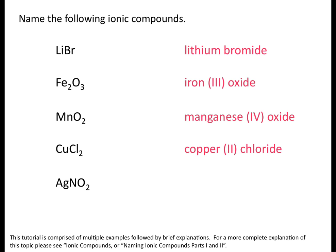For the last example, silver is also in the d block and is considered a transition metal, but silver typically only forms ions with a charge of plus one. So this is one transition metal you don't really need to include a Roman numeral for. The anion is a polyatomic ion — in this case nitrite — so this compound is silver nitrite. Be careful with your -ates and your -ites; these formulas usually only differ by one oxygen and it's easy to mix them up.